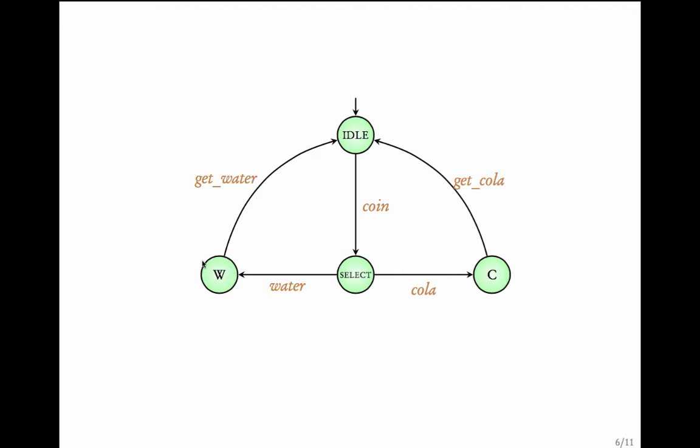Now, depending on whatever the action is, the code goes from the select phase to W or to C. And once it is in the phase which remembers the selection, it will eject the required beverage. So, this is a simple representation of the code. There are more complicated details which have been hidden and we will see later during the course how to incorporate the details. As you see, this is a succinct representation of the behaviour of the code inside a beverage vending machine.